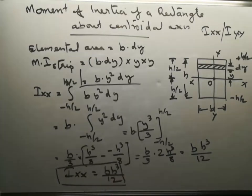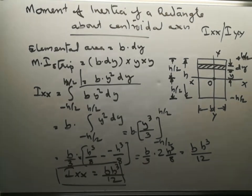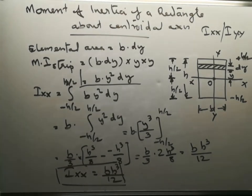This is the equation for the moment of inertia about the horizontal centroidal axis. Ixx equals BH cubed divided by 12.